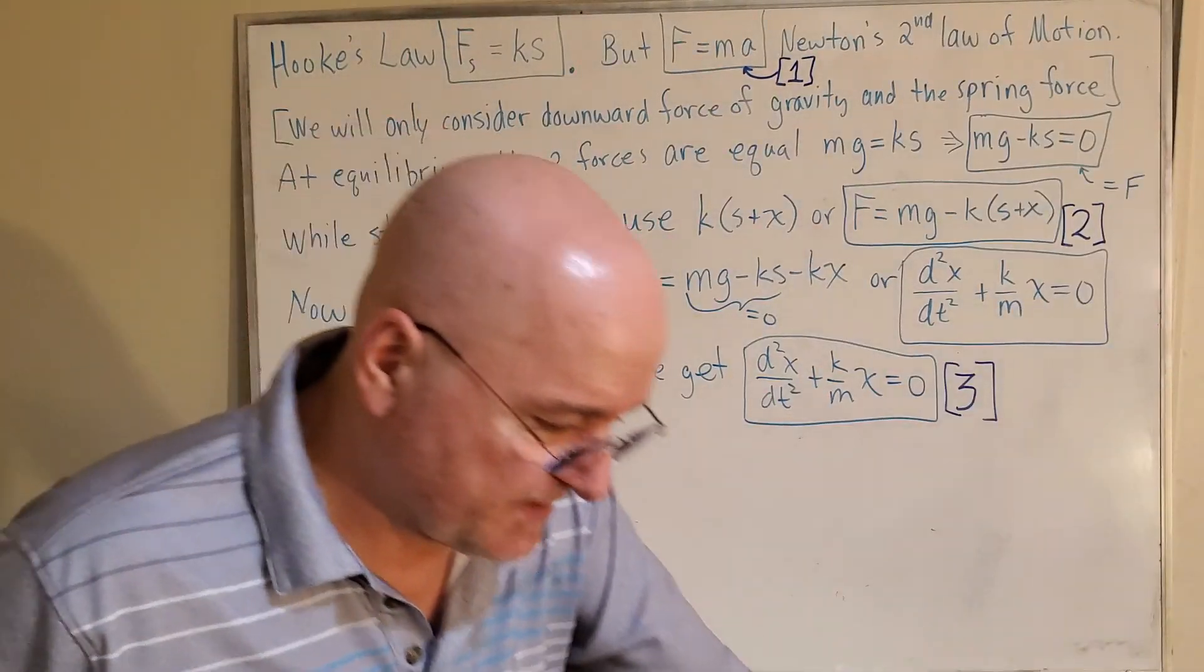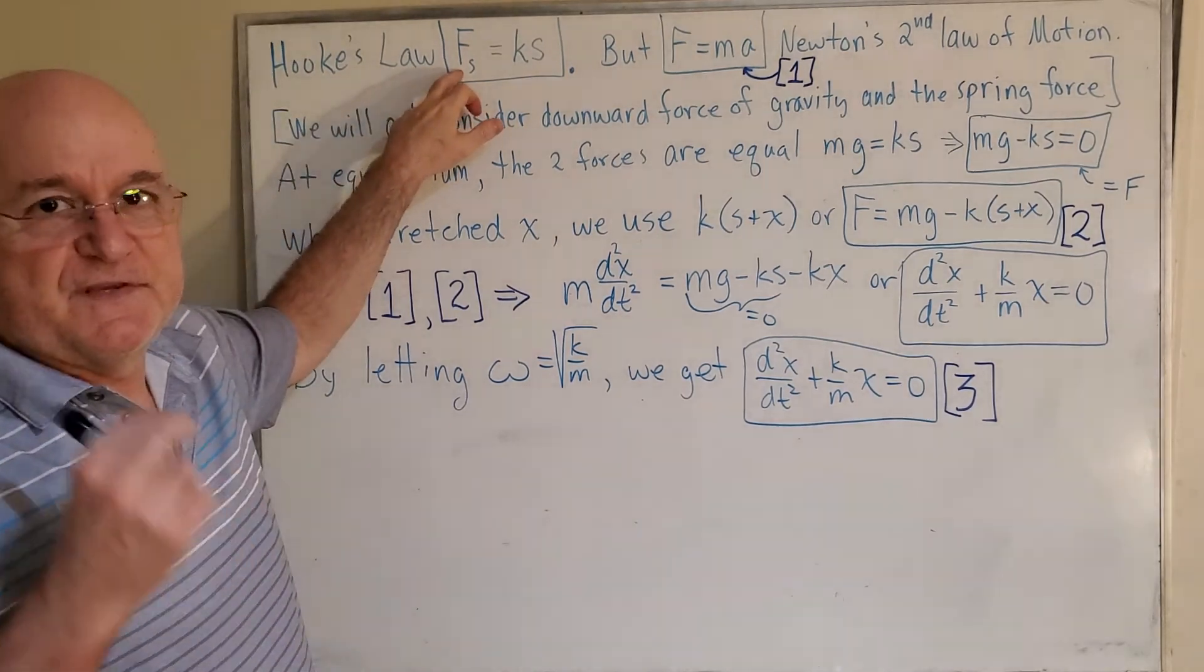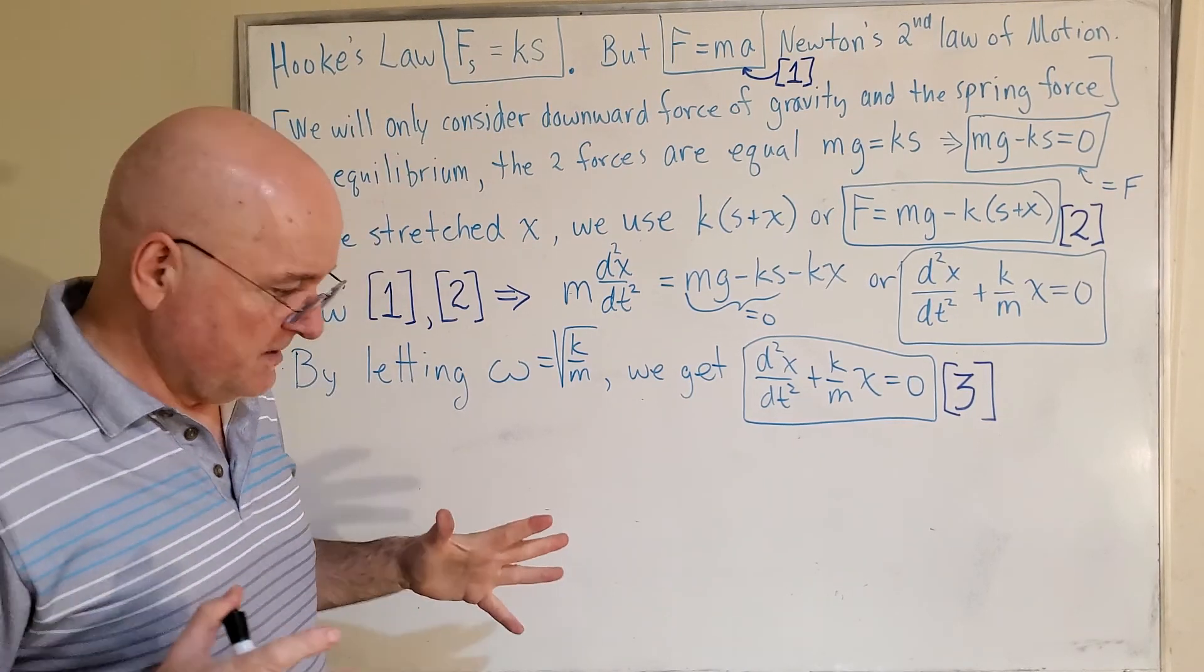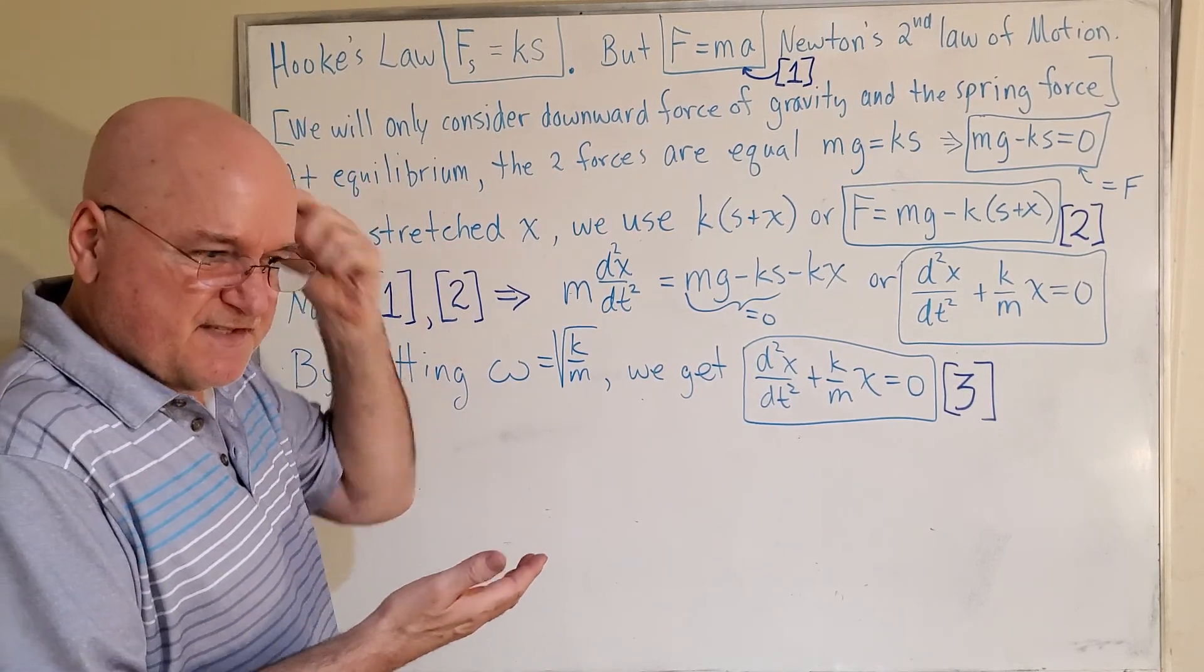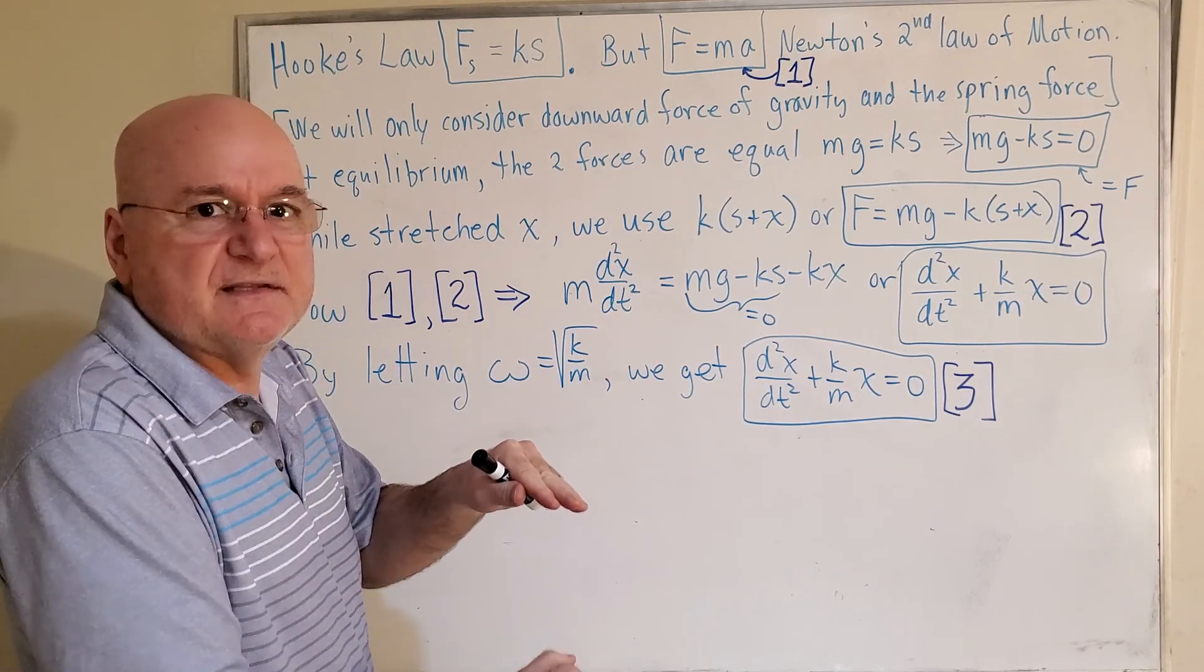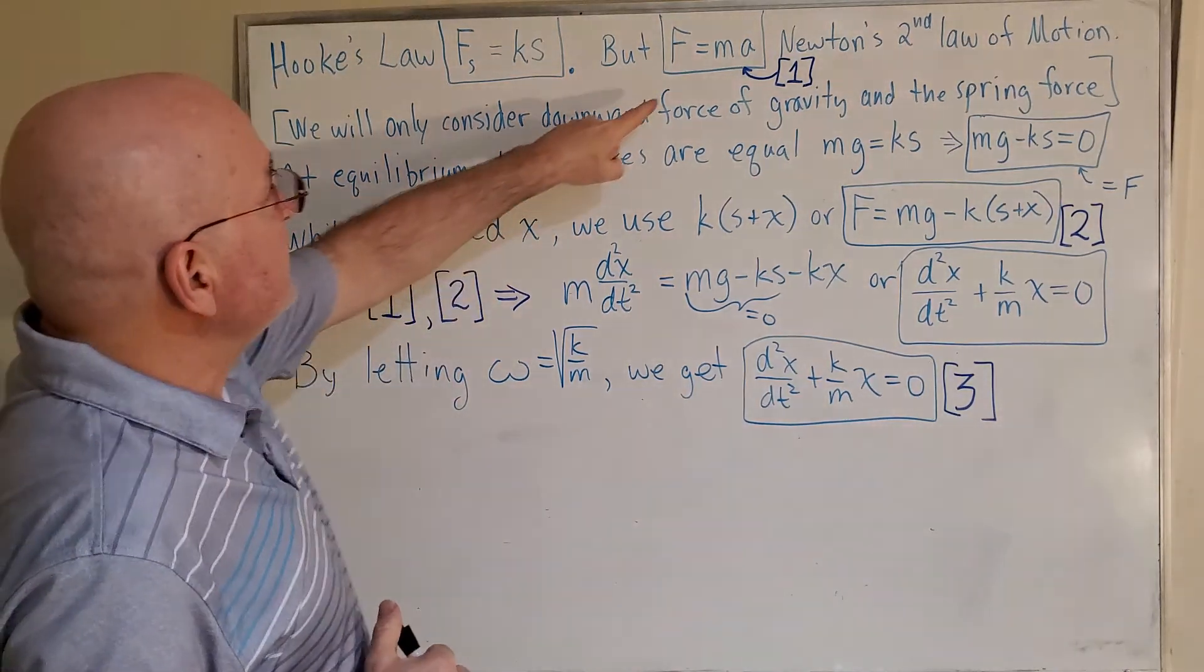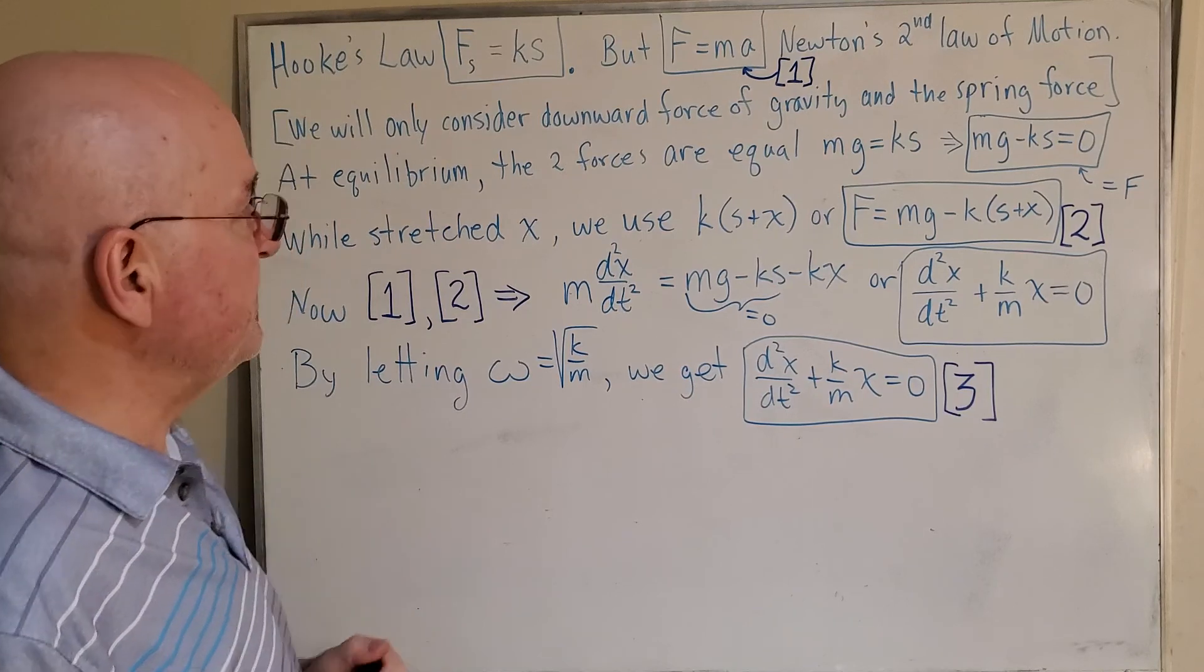Okay, so now a little bit of the theory. Hooke's law says that the spring force is equal to K times S. We saw what S was. S was the distance that the weight pulls, stretches the spring, and is at rest. K is called the spring constant. Then we also know that force equals mass times acceleration. I called that number one, equation number one. It's Newton's second law of motion.